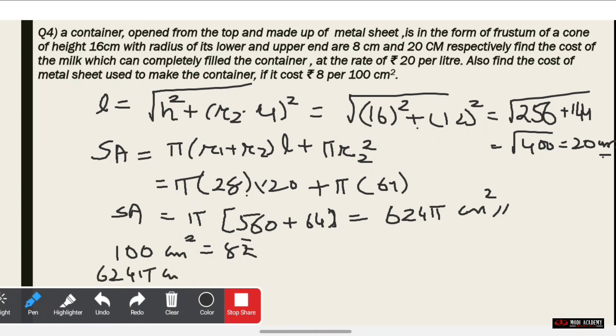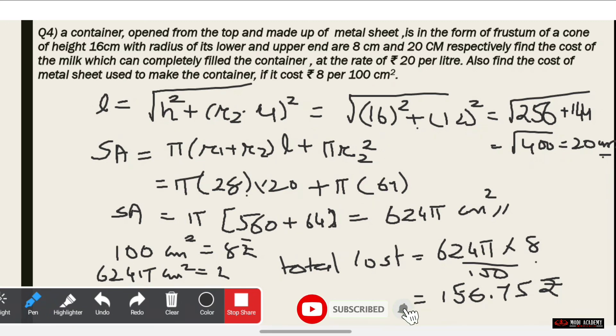Wait, let me recalculate. Surface area = π(r1 + r2)L + πr2² = 22/7[(28 × 20) + 64] = 22/7 × 624 = 624π cm². Total cost will be 624π × 8 divided by 100, which equals approximately 156.75 rupees.